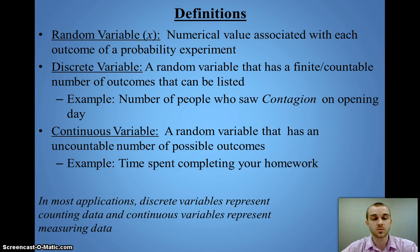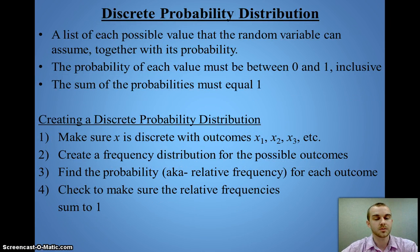For this section, we're going to look only at discrete variables. First, the discrete probability distribution. With this, we have a list of all possible values for a random variable together with its probability. Each probability has to be between 0 and 1, as per definitions of probability.